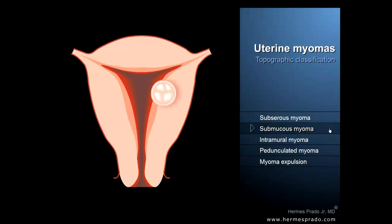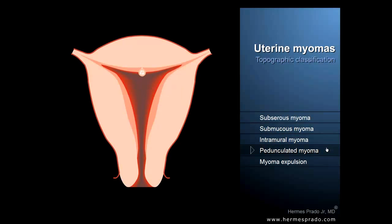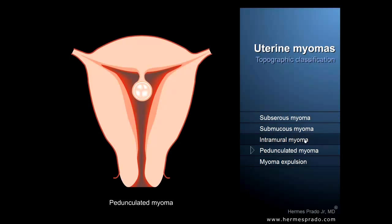There is an observation to be made about tumors that grow near the internal or external surface of the uterus. They may eventually detach from the body of the uterus and get suspended by a peduncle. And when the origin is in the uterine cavity, the peduncle may stretch until the tumor is literally expelled through the cervix towards the vagina.